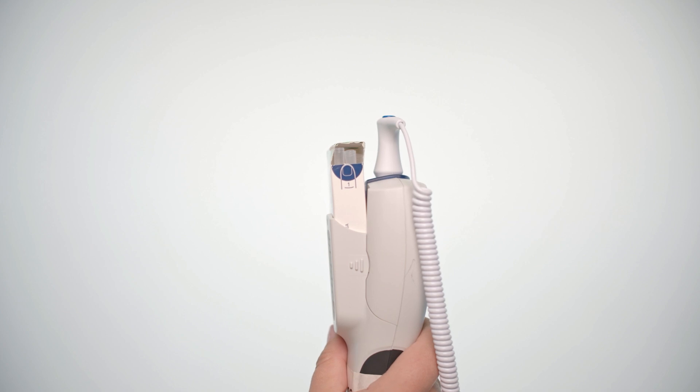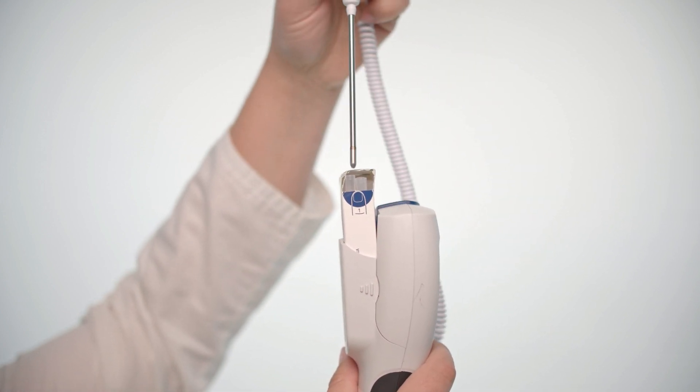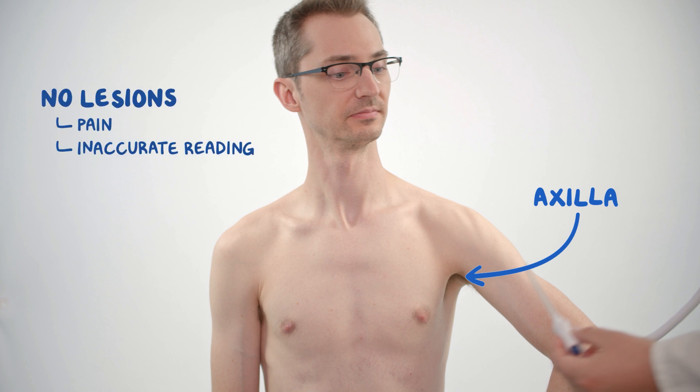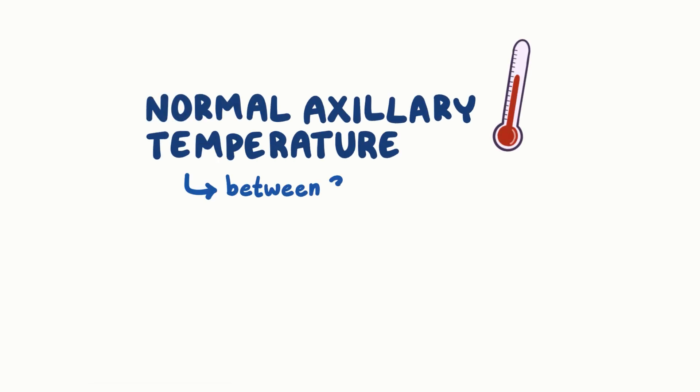We can also take Fred's axillary temperature. Attach the blue oral probe stem to the thermometer. Slide over a disposable probe stem cover. Lift up Fred's arm to reveal the axilla. There should be no lesions present. They may cause pain or an inaccurate reading. Center the probe in the axilla and fold Fred's arm over and onto his chest. Again, wait until you hear the thermometer chime. A normal axillary temperature is between 35.5 degrees Celsius and 37 degrees Celsius or 95.9 degrees Fahrenheit and 98.6 degrees Fahrenheit.